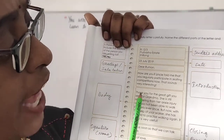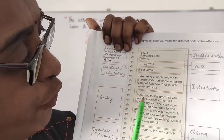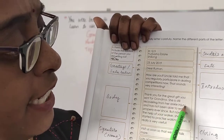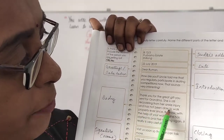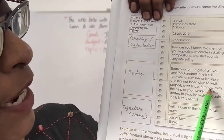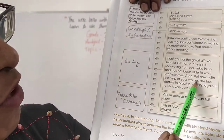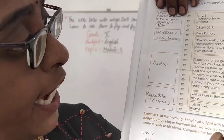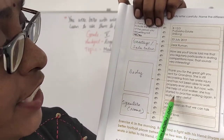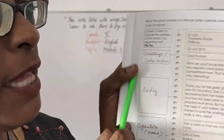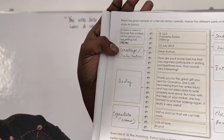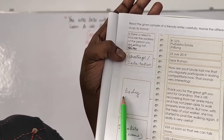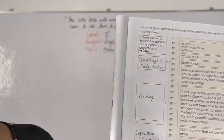'Thank you for the great gift you sent for grandma. She is still recovering from her ankle injury and has not been able to walk properly. But now, with the help of your walker, she has started to practice walking again. It really is very useful.' This is the body — the main purpose of writing the letter.